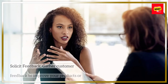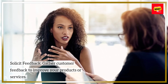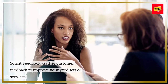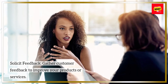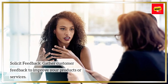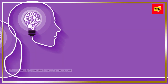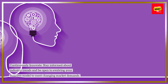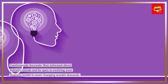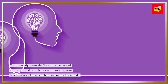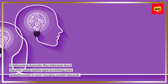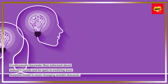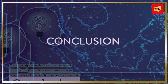Step 12: Adapt and Grow. Solicit feedback — gather customer feedback to improve your products or services. Continuously innovate: stay informed about industry trends and be open to evolving your business model to meet changing market demands.